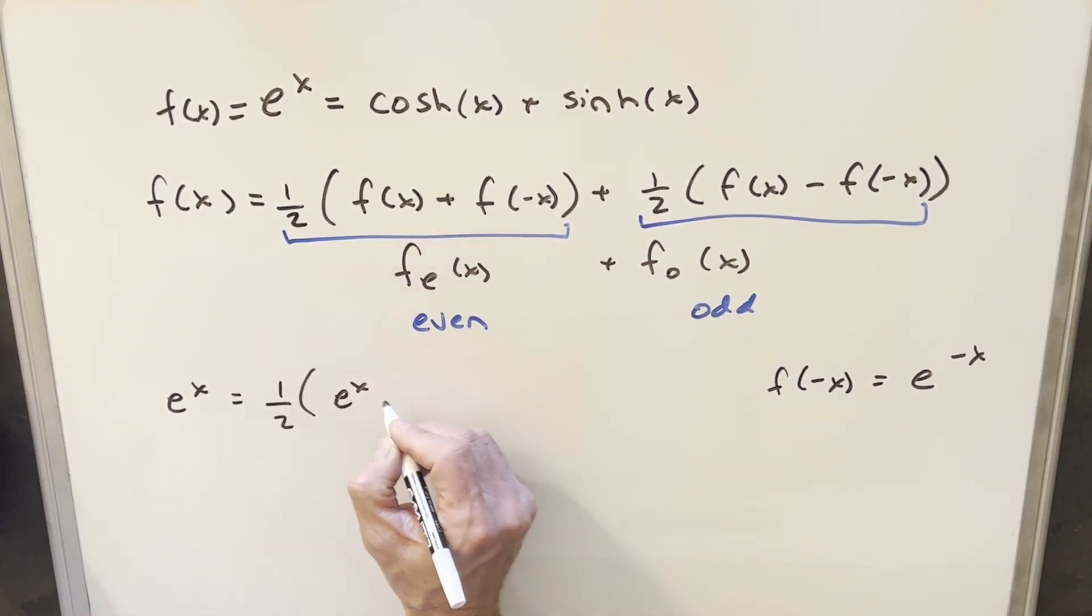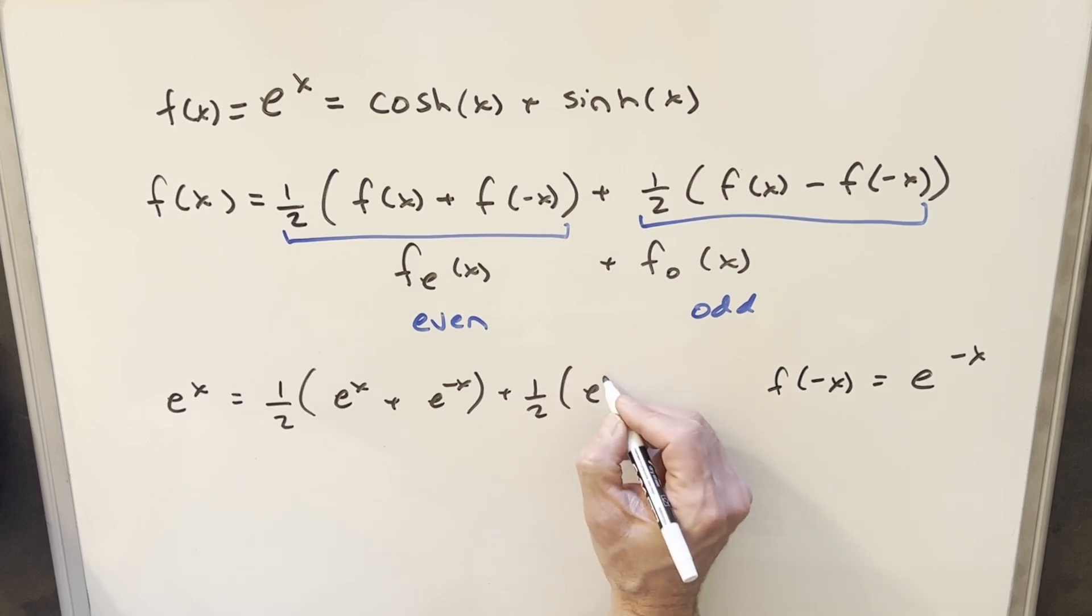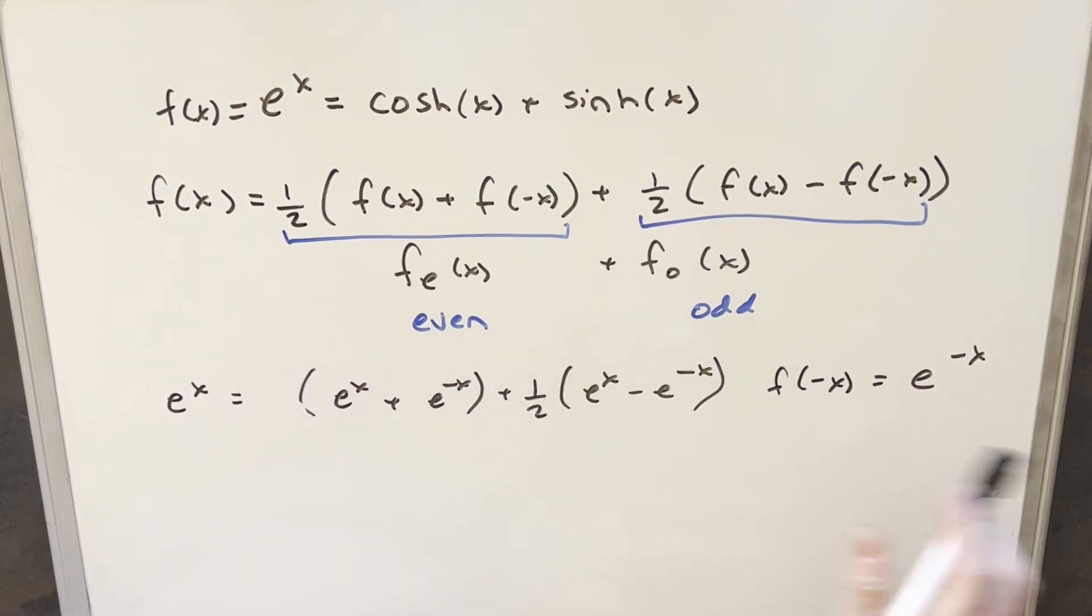So our f of x again is e to the x and this is going to be e to the minus x. Then coming over to this part, we're going to have one half, and again we have e to the x but there's a minus sign here so we have minus e to the minus x. I can just take my one half and write it in the denominator, so we can write this over two.